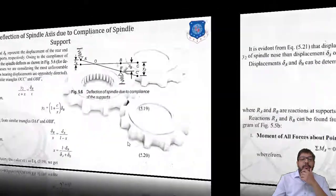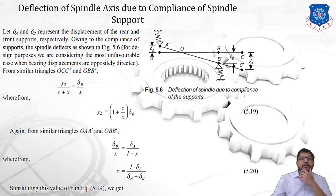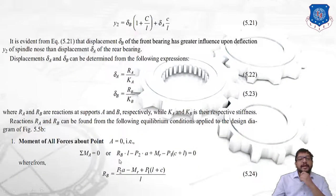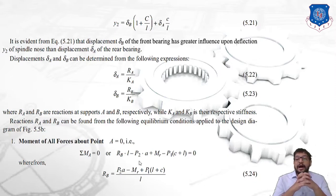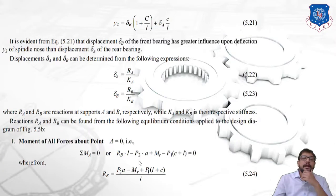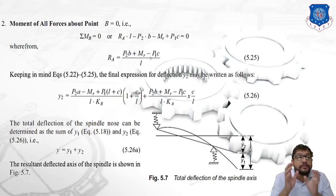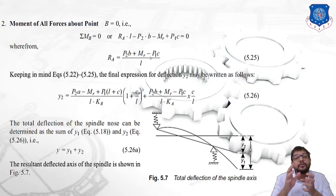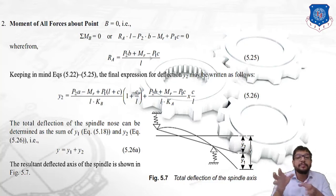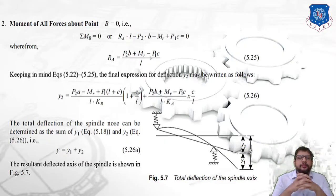Taking moments about point A (ΣM_A = 0): R_b × L − P2·a + MR − P1 × (c + L) = 0, giving R_b = (P2·a − MR + P1·(L + c)) / L, which is equation 5.21. Taking moments about point B (ΣM_B = 0): R_a × L − P2·b − MR + P1·c = 0, giving R_a = (P2·b + MR − P1·c) / L, which is equation 5.25.